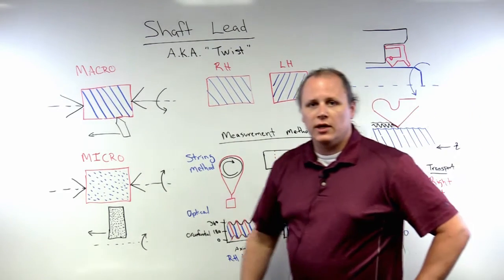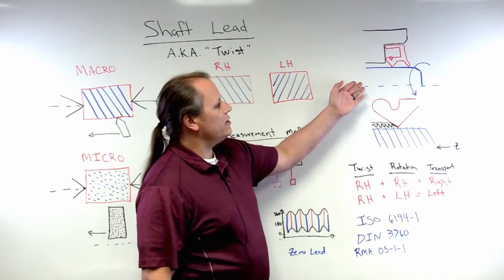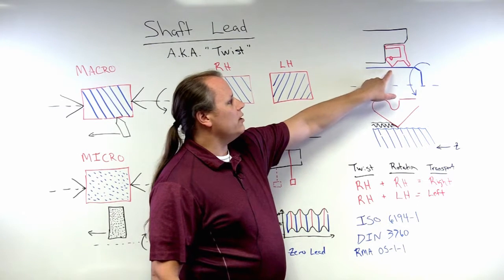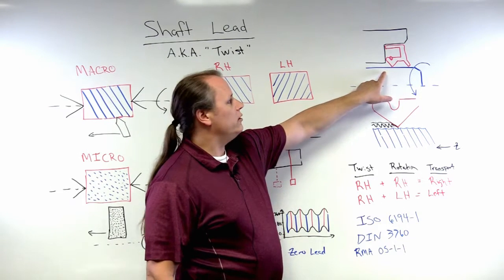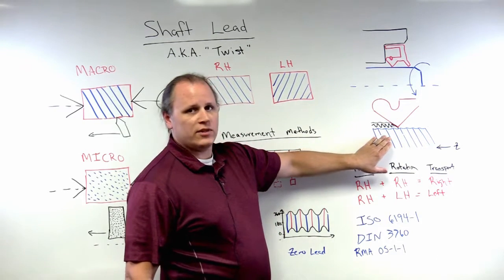So what does this do in a sealing system? Well again, in a rotary sealing system, we have an elastomeric sealing element that is interfacing with a rotating shaft. If we look closer at the surface of the shaft,